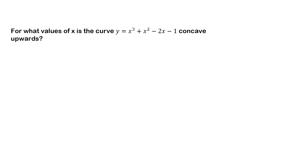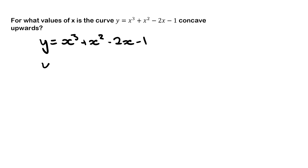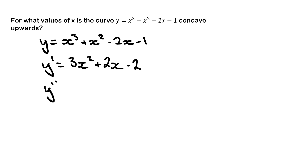For the first example, we need to find for what values of x the curve y equals x cubed plus x squared minus 2x minus 1 is concave upwards. As always, it's a good idea to write down your function first, then find the first derivative, and then find the second derivative.